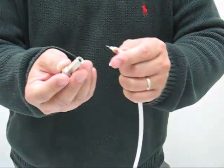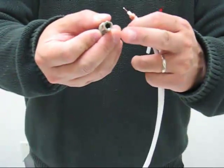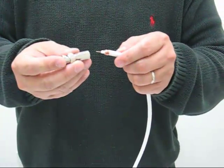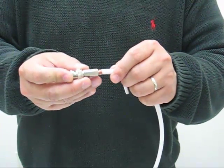At the BNC connector, when you look inside, there is a tiny hole at the bottom. Insert the center conductor into this hole.